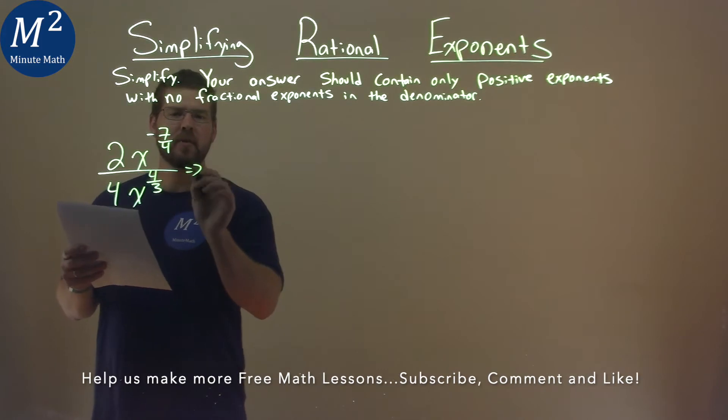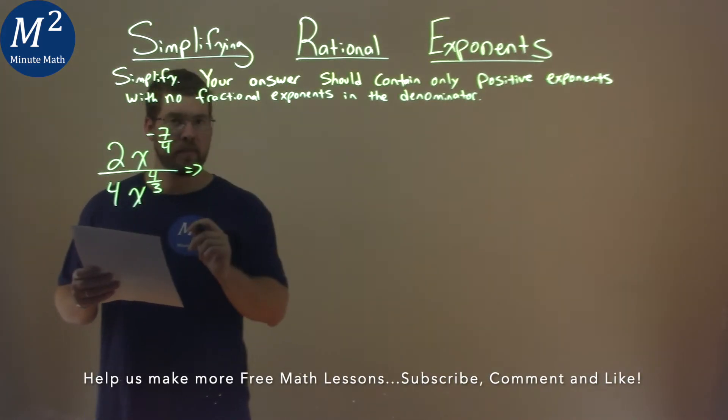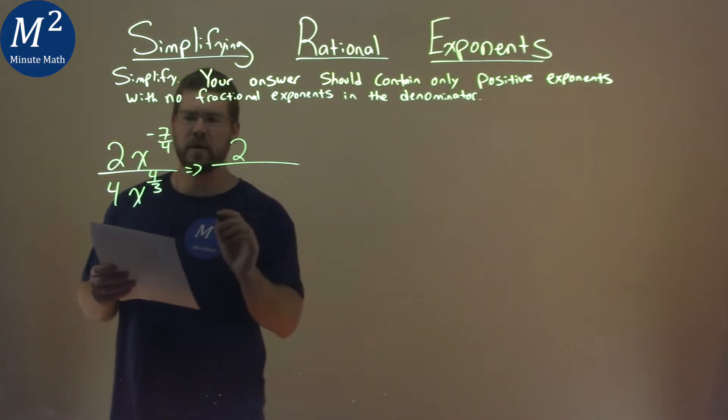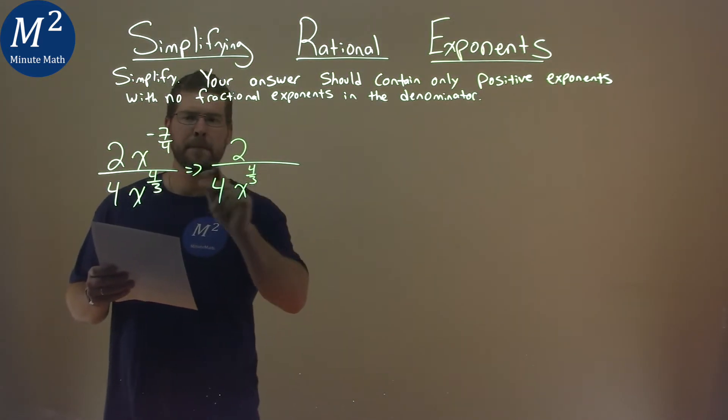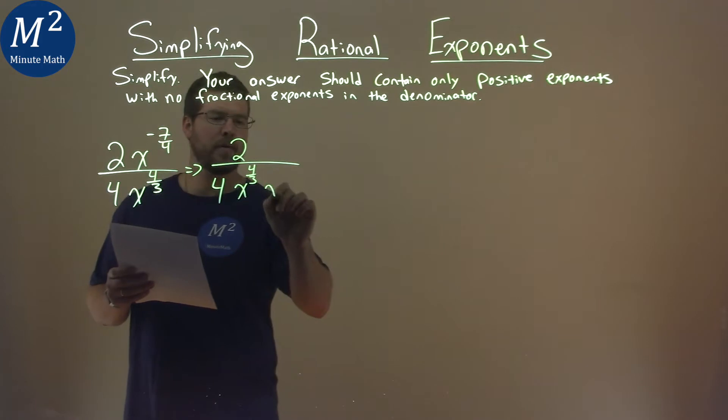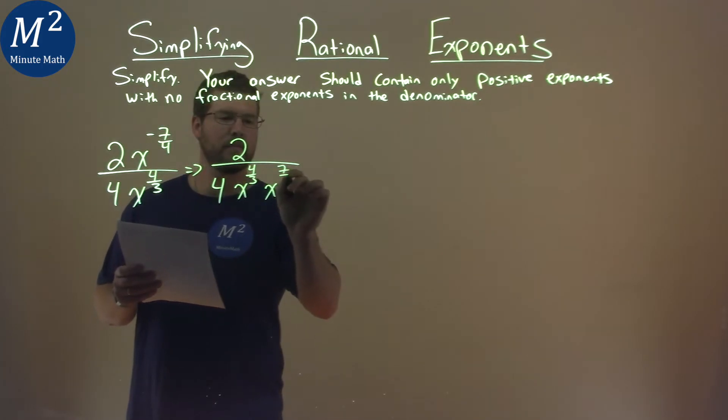Well, first, let's bring this negative exponent down to the denominator. So we have 2 stays in the numerator, we have 4 right there, x to the 4 thirds power, but instead of a negative 7 fourths power, we have x to the positive 7 fourths power.